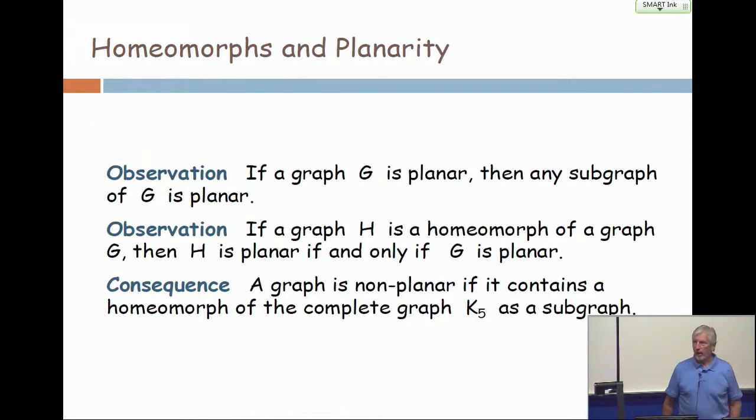And it's obvious that a graph is planar if and only if a homeomorph of it is planar, and it's also obvious that any subgraph of a planar graph is planar. And so, when you put those two things together, a graph is nonplanar if it contains a homeomorph of K5 as a subgraph.